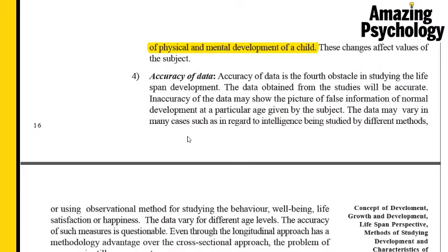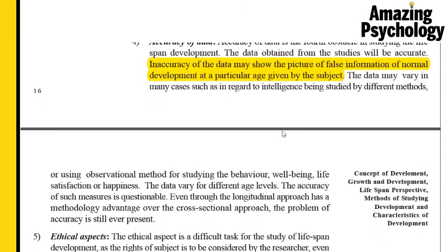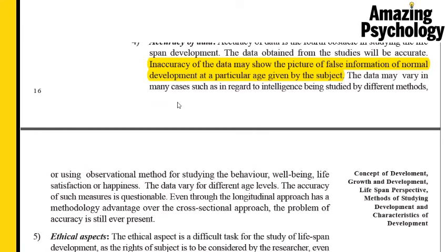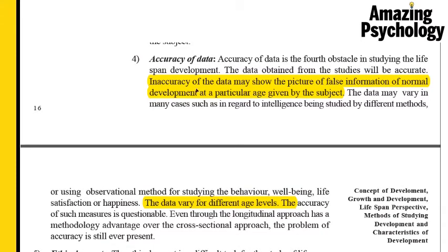The fourth obstacle is accuracy of data. The data obtained from studies is supposed to be accurate, but inaccuracy may produce a false picture of normal development at a particular age. Data may vary in many cases — for example, when studying intelligence using different methods, or when using an observational method to study behavior, well-being, or happiness. The data varies for different age levels, and the accuracy of such measures is questionable even when using a longitudinal approach.